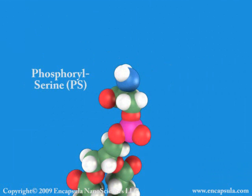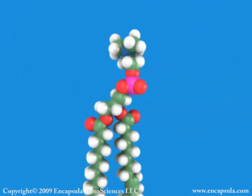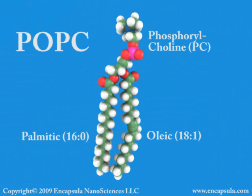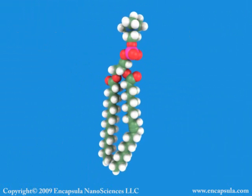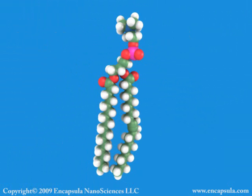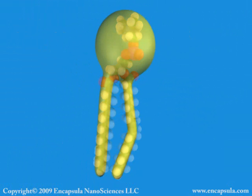The PC and PE head groups have no charge, while the PG, PI, and PS head groups are negatively charged. The most common naturally occurring phospholipid is POPC.